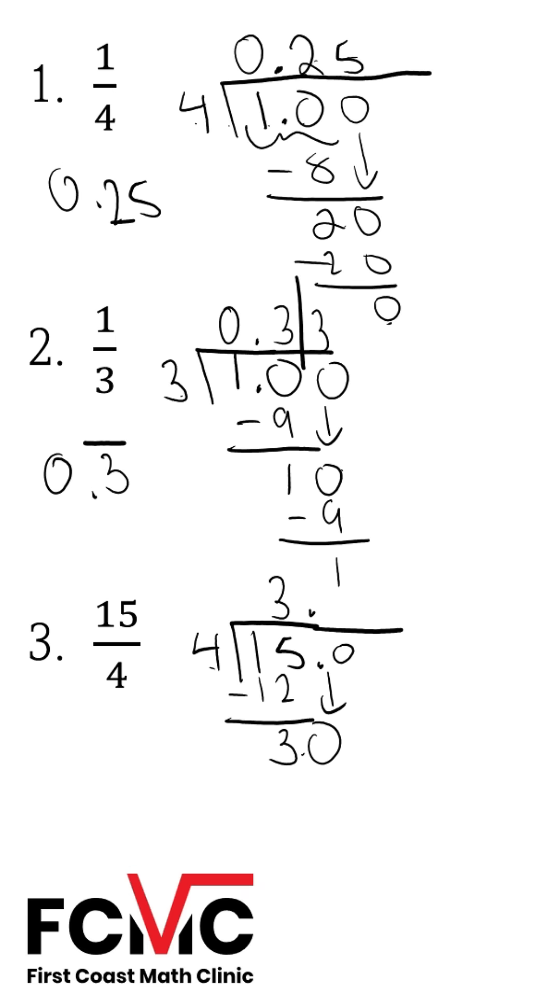Four goes into 30 seven times. Seven times four is 28. Subtract, we get two. Put a zero in the hundredths column. Bring down that zero. Four goes into 20 five times. Five times four is 20. Subtract, we get zero.